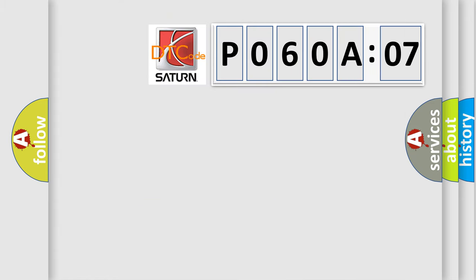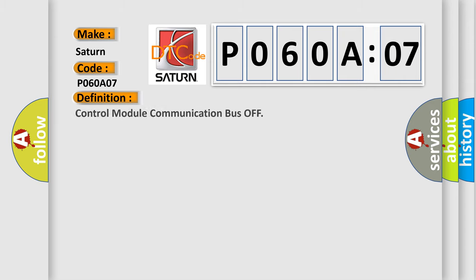The number itself does not make sense to us if we cannot assign information about what it actually expresses. So, what does the diagnostic trouble code P060A07 interpret specifically for Saturn car manufacturers? The basic definition is Control Module Communication Bus Off.